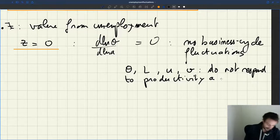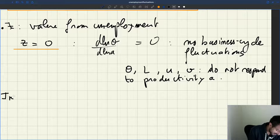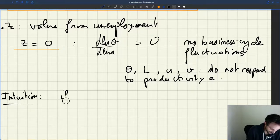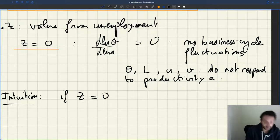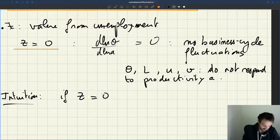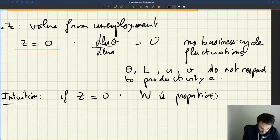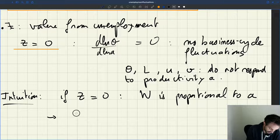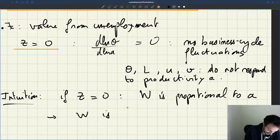So there your model is really not helpful to think about business cycles. Why is that? What's the intuition behind this result? Well, actually it's pretty simple. If Z equals zero, the idea is that the wage that comes from surplus sharing is actually going to be proportional to productivity. So your wage is going to be what we call flexible. It's going to move one for one with productivity.